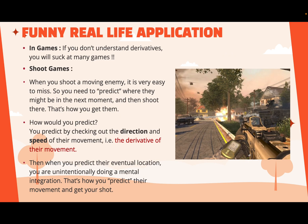Let's shift our focus to something more relatable — video games. Have you ever wondered why some people seem to excel in video games while others struggle? Derivatives might be the secret ingredient. Imagine playing a shooting game where you need to hit a moving enemy. To be successful, you need to anticipate where they will be in the next moment and aim your shot there. By taking into account the direction and speed of their movement, represented by derivatives, you can estimate their future position. And when you predict their eventual location, you're actually performing a mental integration — integrating their speed and direction over time to line up the perfect shot.